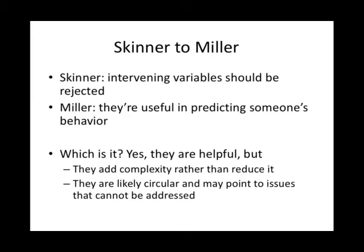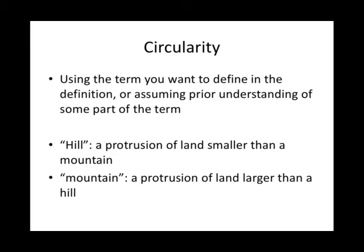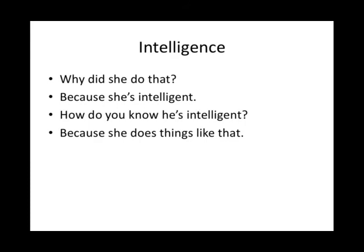Circularity occurs when you use the term you want to define in the definition itself, or assume prior understanding of some part of the term. For example: a hill is a protrusion of land smaller than a mountain, and a mountain is a protrusion of land larger than a hill — but how do we know what either one is? They're circular definitions. Likewise in psychology, we may think of intelligence as an intervening variable: why did she do that? Because she's intelligent. But if you probe further and ask how you know she's intelligent, and the answer is 'because she does things like that,' then we have a circular concept.